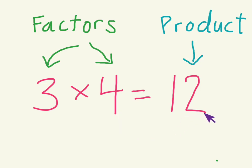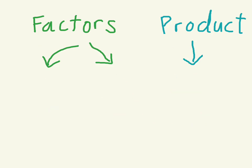And these words would be the same no matter what numbers we plug in here. So if we changed it and maybe we said 5 times 10 equals 50, now the factors are 5 and 10, and the product is 50.